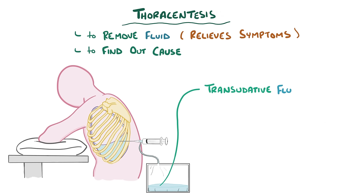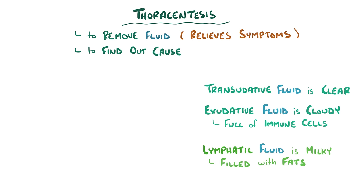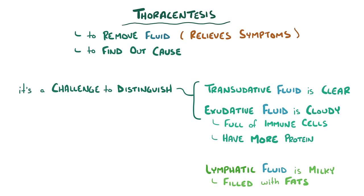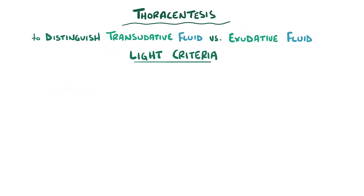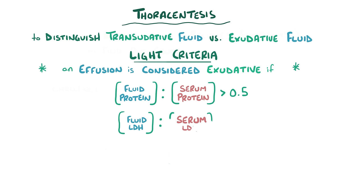Transudative fluid looks clear. Exudative effusions are full of immune cells and therefore look cloudy. Lymphatic fluid is filled with fats and looks kind of like milk. The biggest challenge is often distinguishing between a transudative and exudative effusion, and the key difference is the amount of protein — exudates have much more. To help with that distinction, there are criteria called Light's criteria. A pleural effusion is considered exudative if the ratio of pleural fluid protein to serum protein is greater than 0.5, the ratio of pleural fluid LDH to serum LDH is greater than 0.6, or if the LDH in the pleural fluid is more than two-thirds the upper limit of normal levels in the serum.